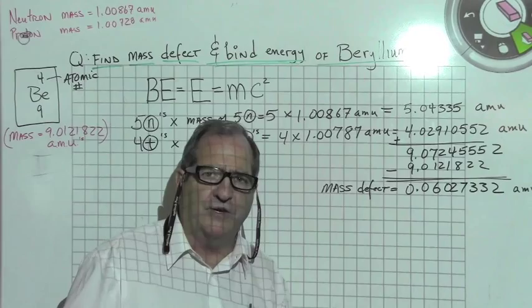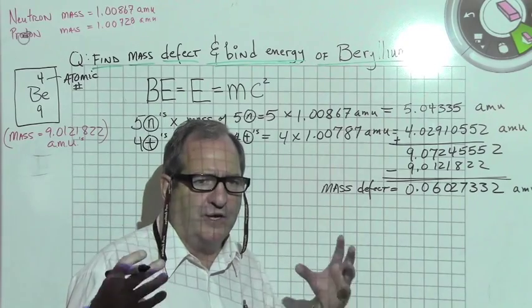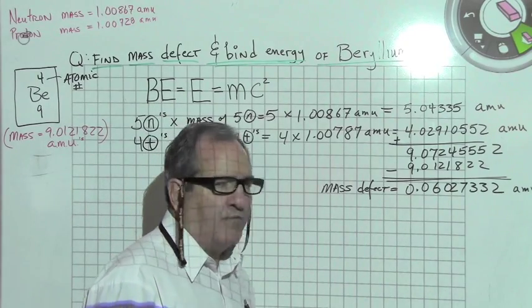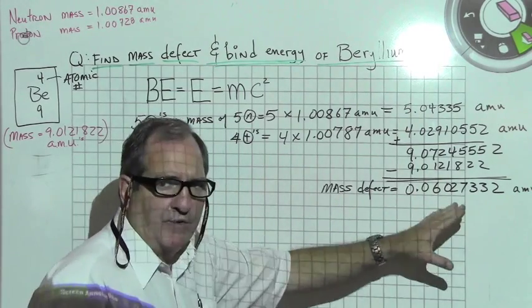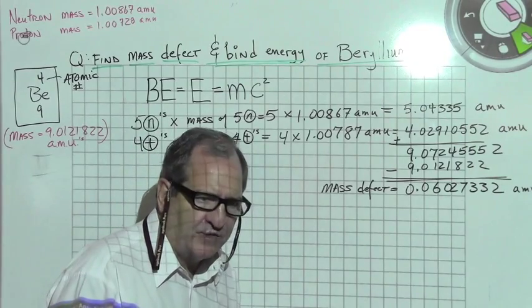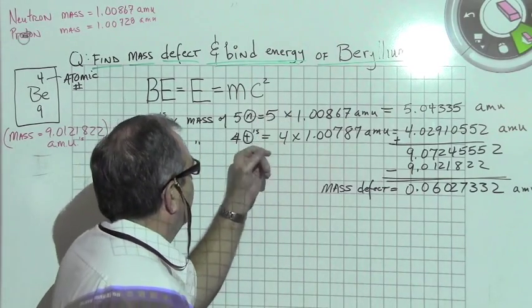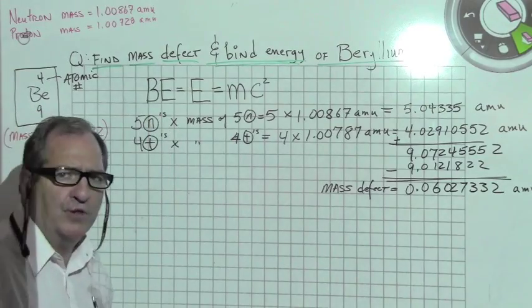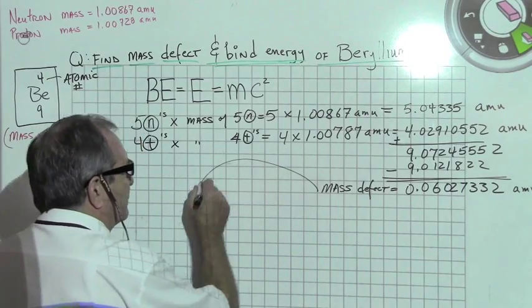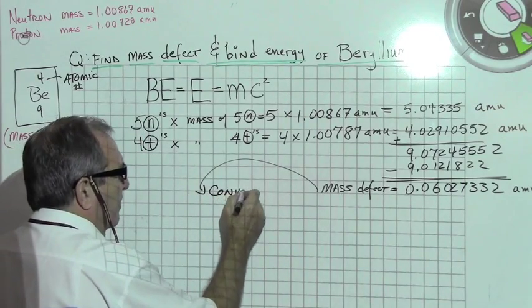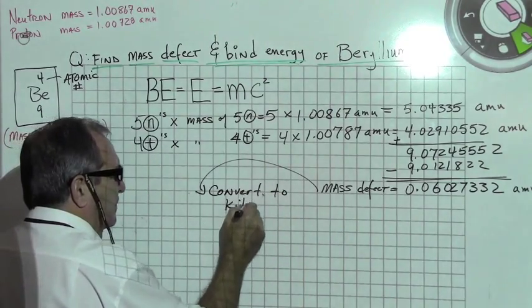That leaves us with what is called a mass defect of 0.06027332 atomic mass units. Now, it's a big number. I'm not rounding off on purpose, because it will throw the, there's such small increments of energy involved here with one single atom, that we have to be careful. So we don't want to round off too much. We can round off our final answer to the proper amount of significant figures, but not until then. I've asked for two things. That is mass defect, and I've also asked for the total binding energy. Once I have this, I need to convert this to kilograms.